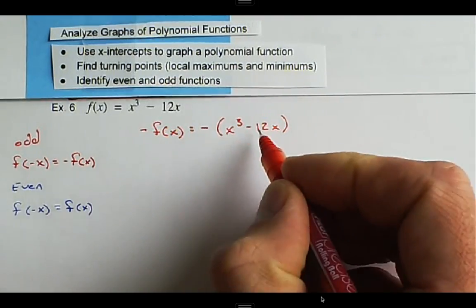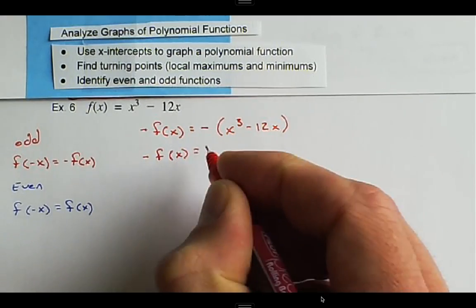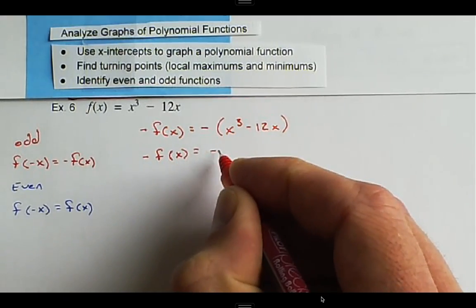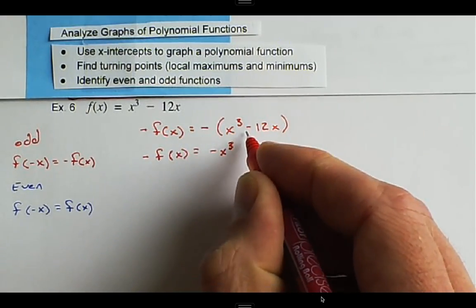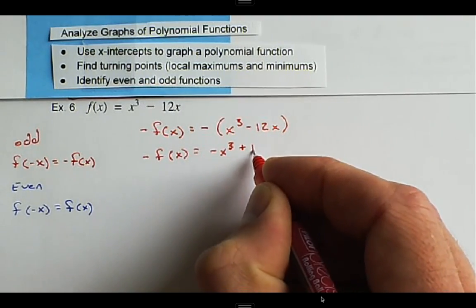And we can distribute the negative in, so we get the negative negated the entire function. So distribute the negative, we get -x³. And then negative times negative is positive, so that becomes +12x.